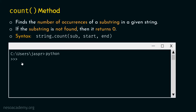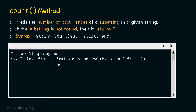Let's see some examples to better understand how count method works. We need to open our command prompt and activate the Python interactive shell. After activating it, we type: 'I love fruits, fruits make me healthy'.count('fruits'). The job of count method is to find the number of occurrences of the substring 'fruits' within the string. If we hit enter, we will get two as a result, because 'fruits' is occurring two times in the string.